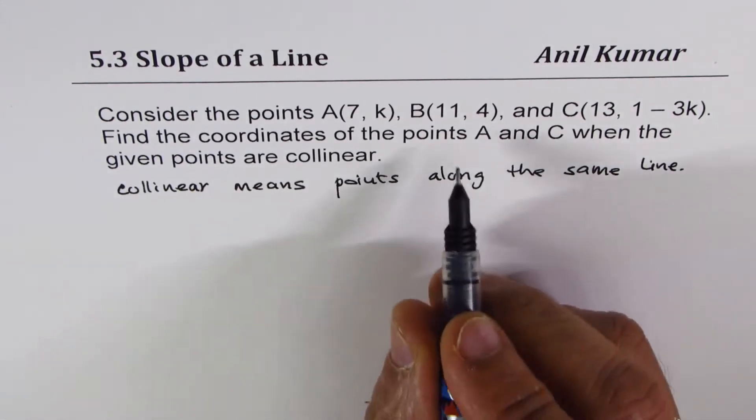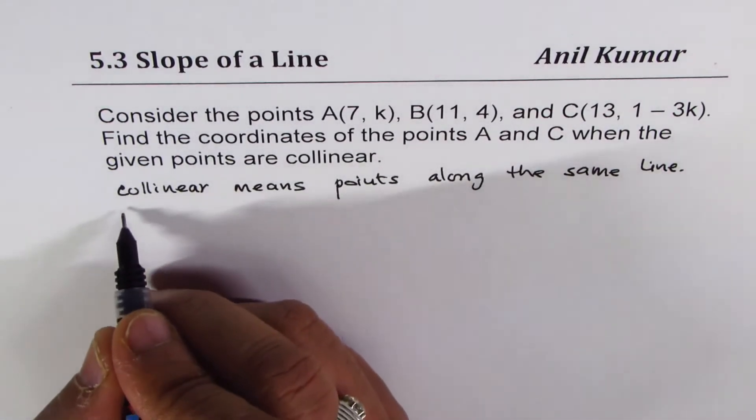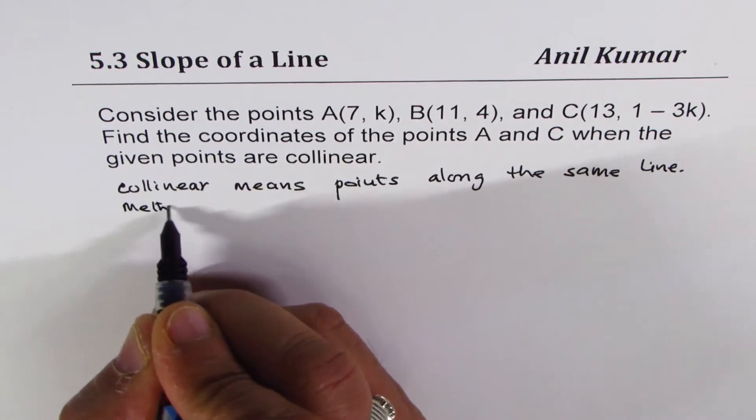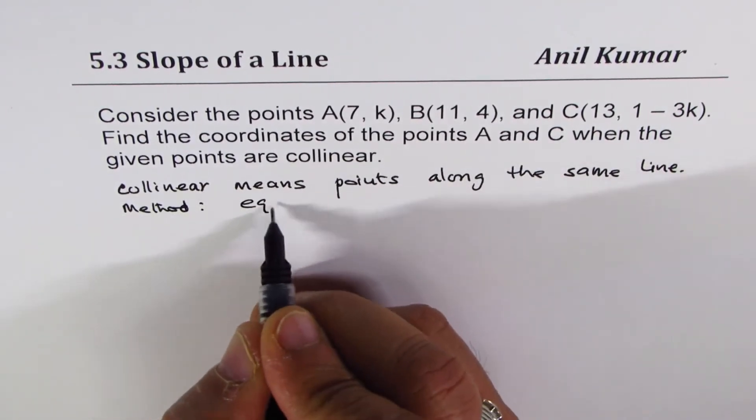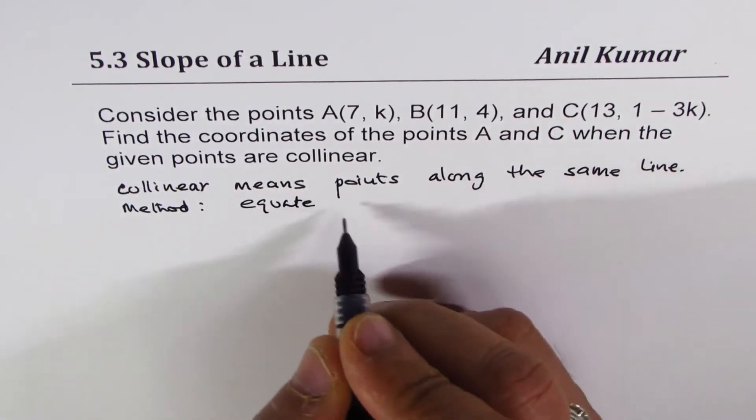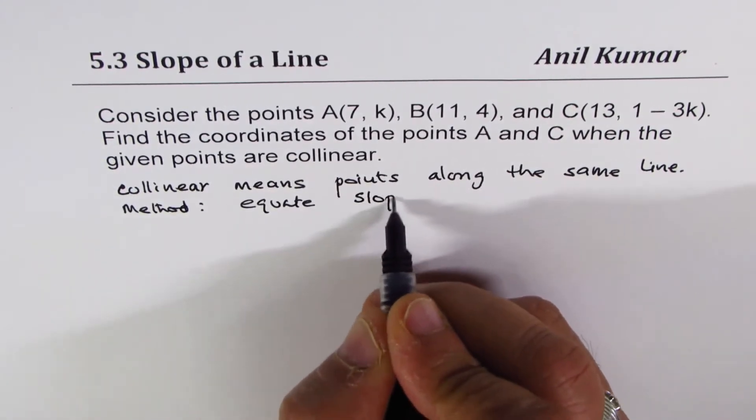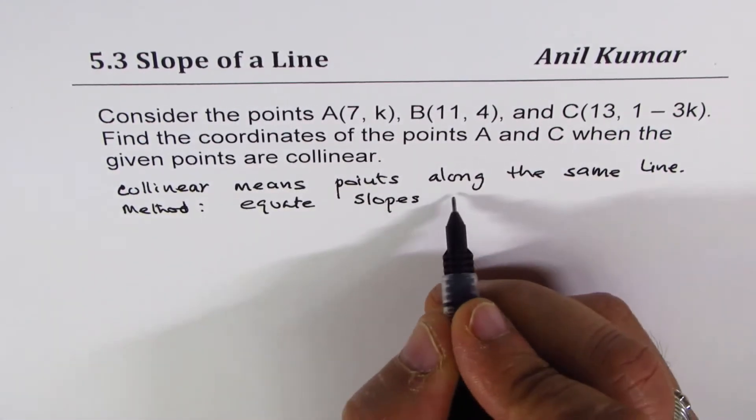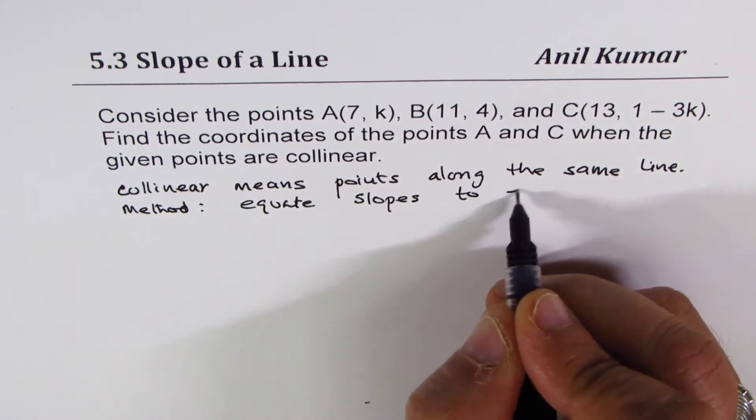And how do you find that the points are collinear? The method is equate slopes to equal values.